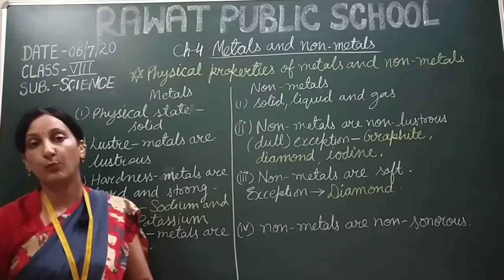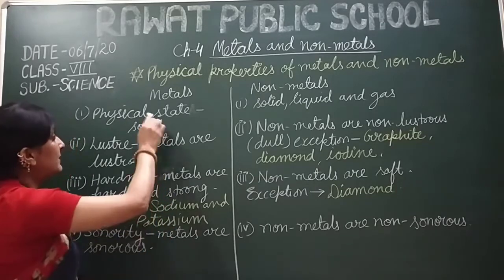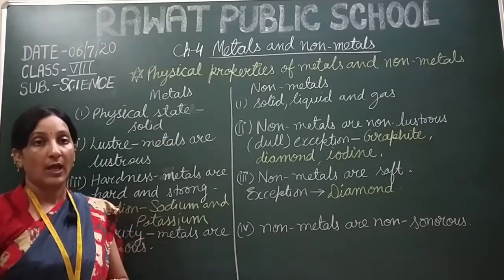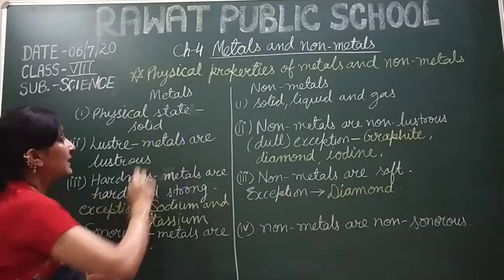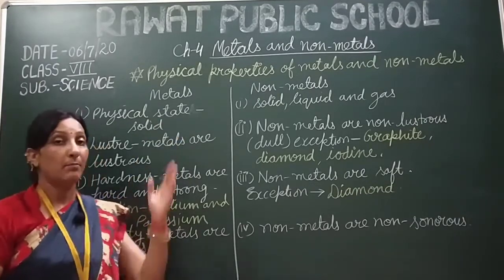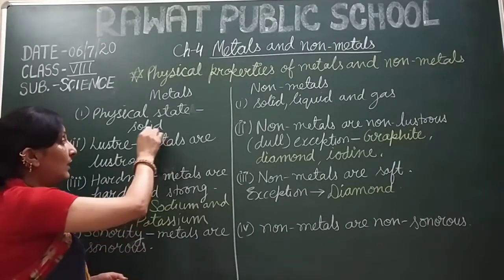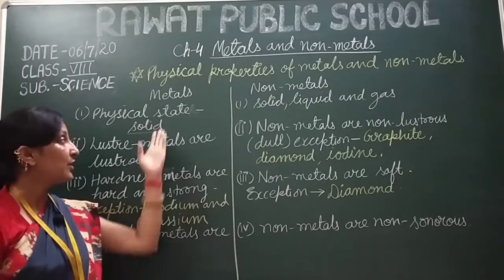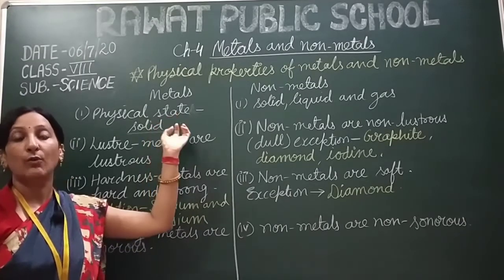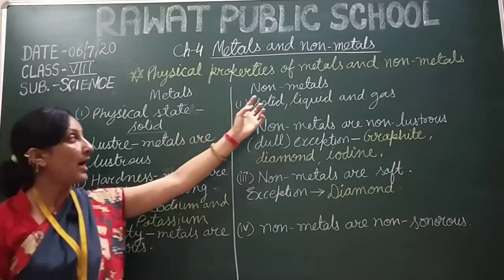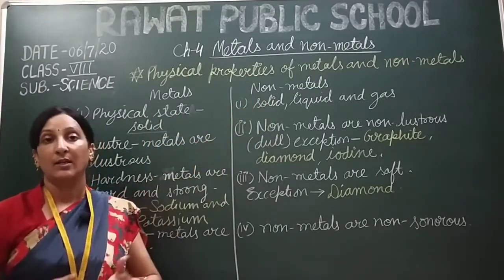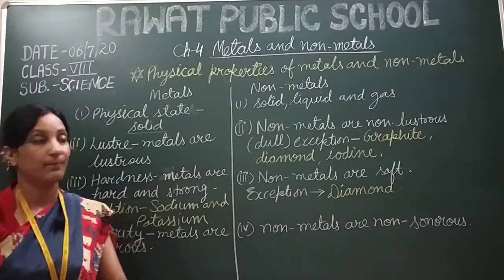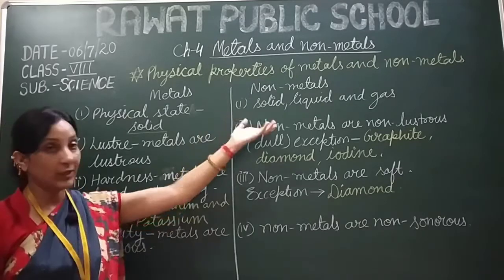The first point of comparison is their physical state. As we studied in our previous lesson, metals are only found in solid state. The exception is mercury, which is liquid at room temperature. Non-metals, on the other hand, can be found in solid, liquid and gaseous state — all three states.